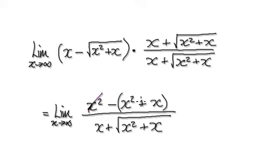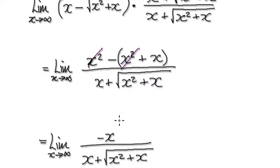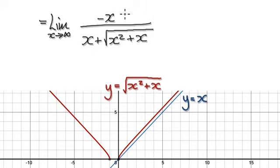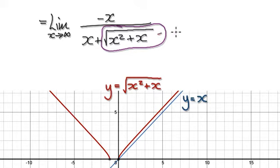And then when you tidy this up, it will give you this. You can use L'Hôpital's rule, but it will be a lot of work. The trick is to realize that, as x tends to infinity, this thing here is actually x, as x tends to infinity.